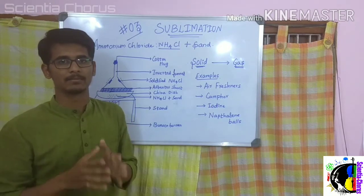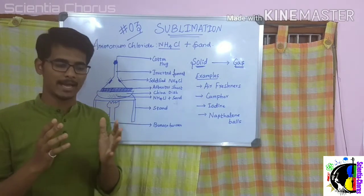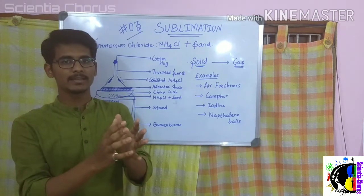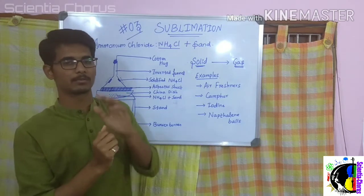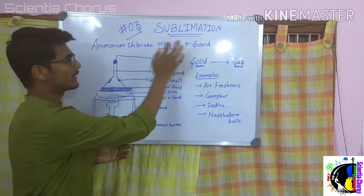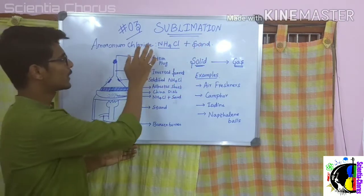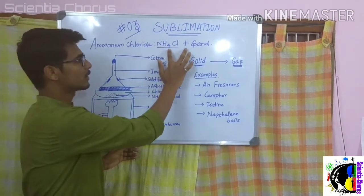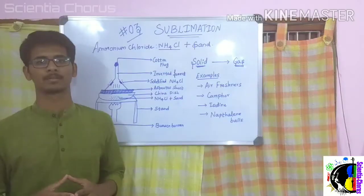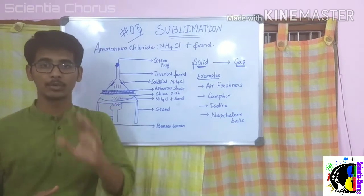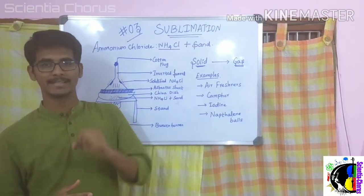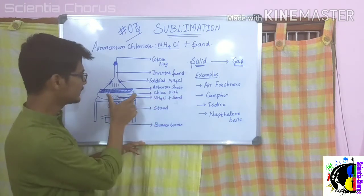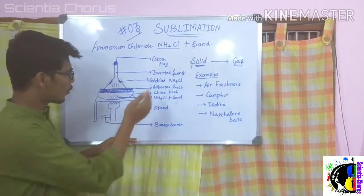To make it simple, let's take an example. I'm having a mixture — ammonium chloride and sand. The formula for ammonium chloride is NH4Cl. I want to separate only the ammonium chloride from the sand.